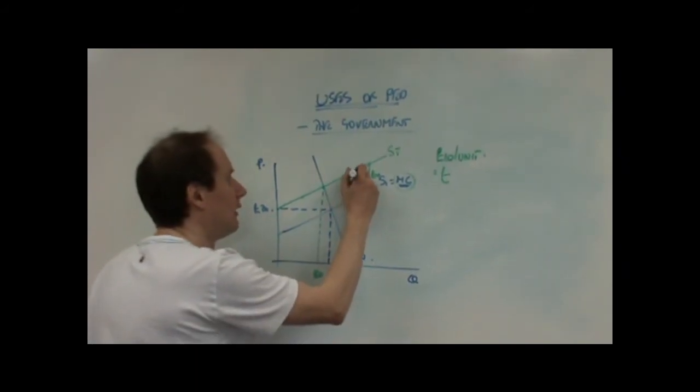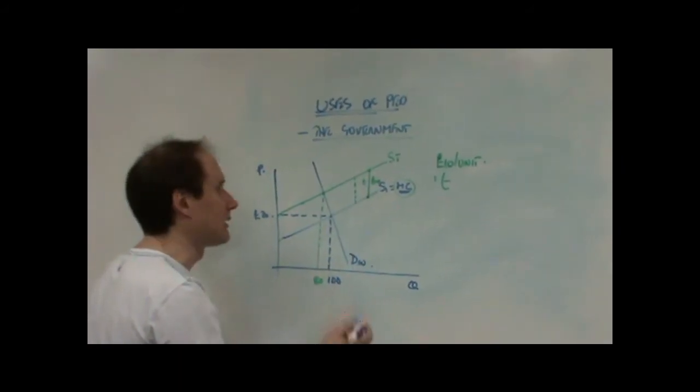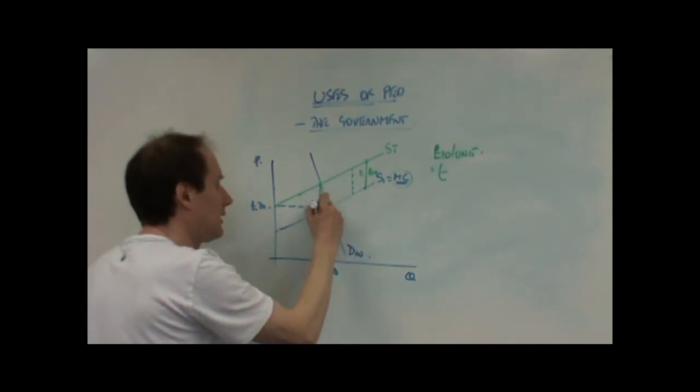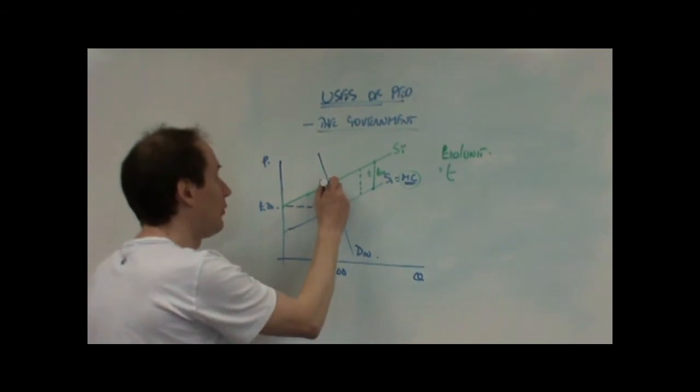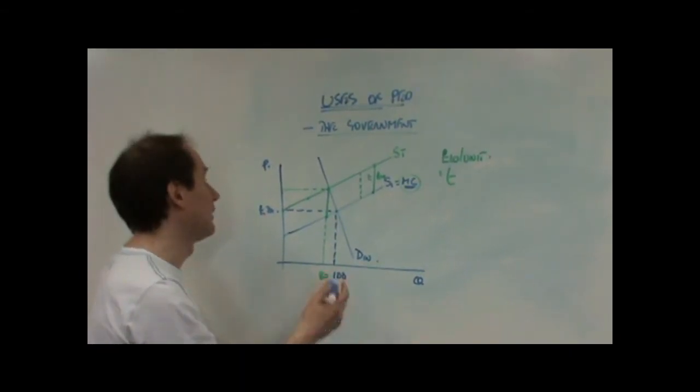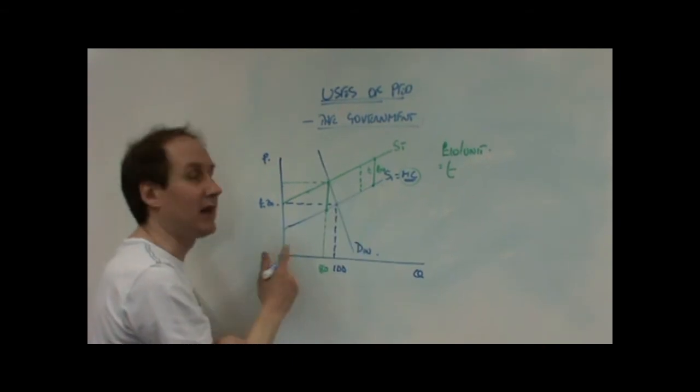They may not be able to push price up by the entire amount of the tax. And you can see that quite clearly. Each one of those gaps is 10 pounds. So, that gap is therefore 10 pounds. So, therefore the new equilibrium price must have risen by less than 10 pounds. That looks like about 8 pounds.